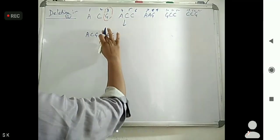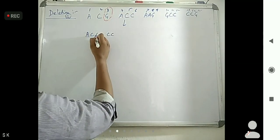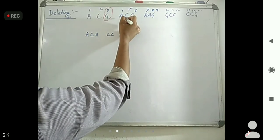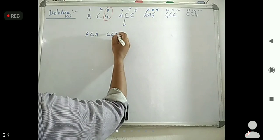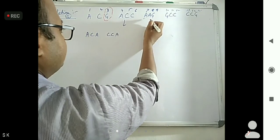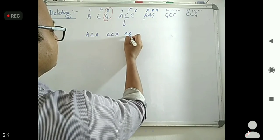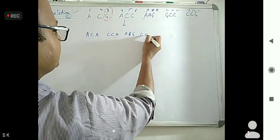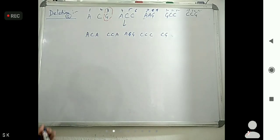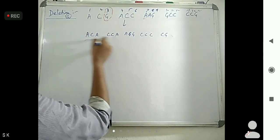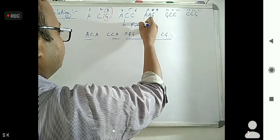Here A, C — just so that no confusion will be there — A, C, A then A, C, A then C, C, A. This also changes. Okay, then what happens: A, Z, Z then C, C, C then C, Z. Okay, so in this way this entire frame has been changed, so it is known as frame shift mutation.